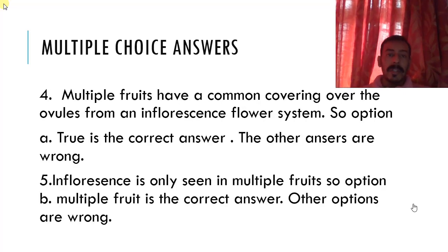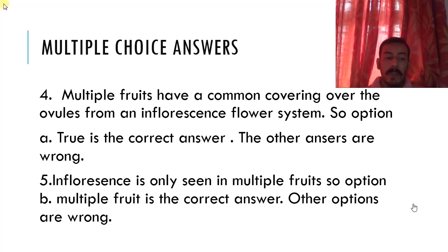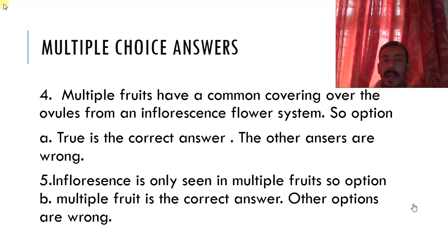Now, multiple choice answers. Multiple fruits have a common covering over the ovule from an inflorescent flower system. So option A, true is the correct answer. The other options are wrong. Fifth question's answer: the inflorescence is only seen in multiple fruits. So option B, multiple fruit is the correct answer. I have already said, simple fruit, they have single flower. In aggregate fruit, we have one flower but different ovules. In the third option, we have inflorescence system. So that inflorescence is seen in multiple fruits.